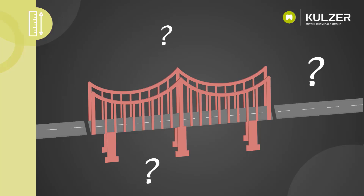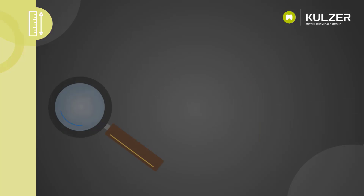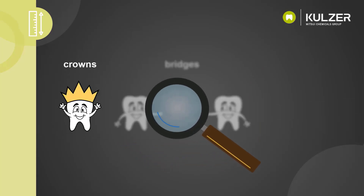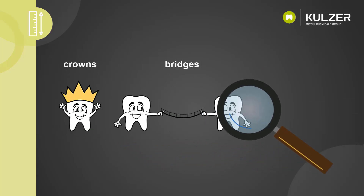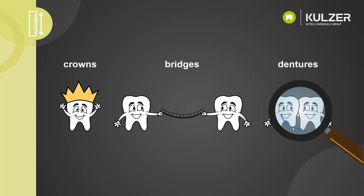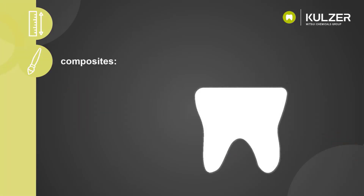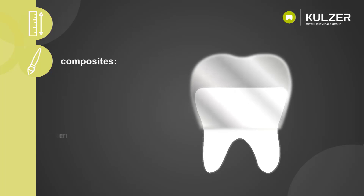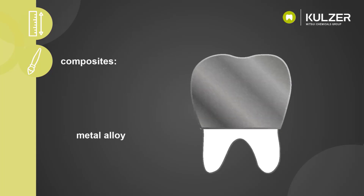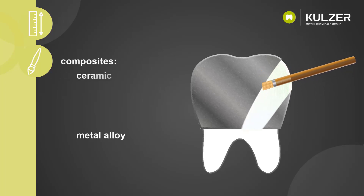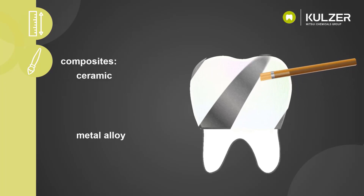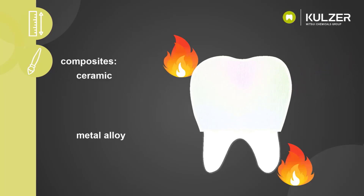In dental technology we often have different materials that are bonded together. We find this for example in crowns, bridges, and dentures. Let's take a closer look at the two composites for a crown. The crown is made of a metal alloy, and the ceramic is then layered on top and fired in the dental furnace — this is when the heat gets involved.